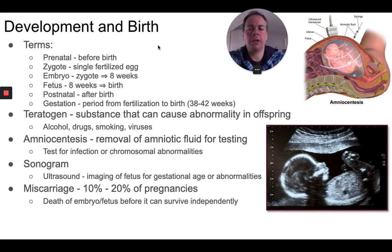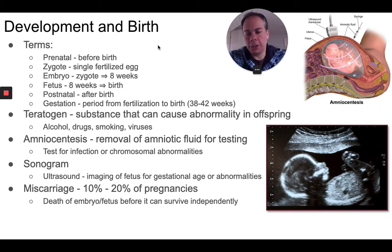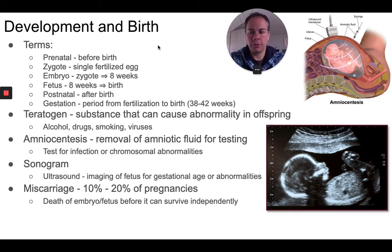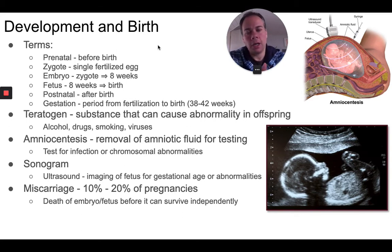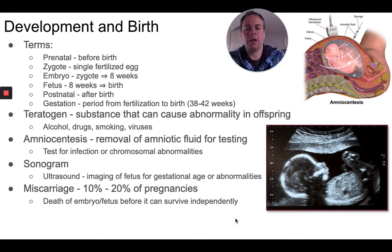Certain substances can cause disease or abnormalities in the offspring and are called teratogens — things like alcohol, drugs, certain viruses, certain chemicals, and smoking can affect the embryo, especially in the earliest stages when major organs and organ systems are developing. So it's important that when a woman becomes pregnant she avoids those substances. Fluid from the amnion can be sampled using a long needle — called amniocentesis — and used to test for chromosome abnormalities or to determine the sex of the child. Sonograms use sound waves to get an image of the embryo to check that everything looks healthy.